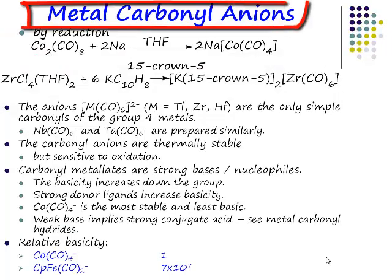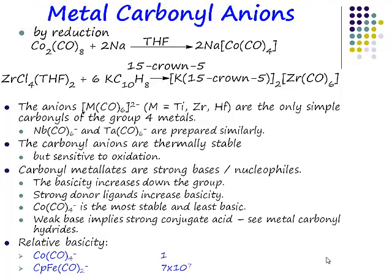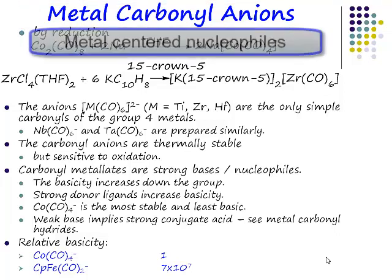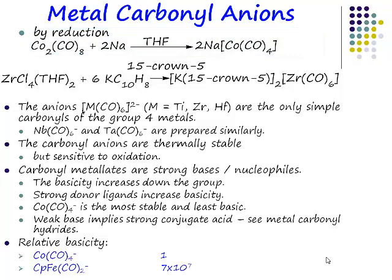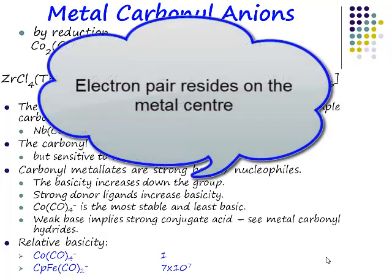These metal carbonyl anions have negative charge centred on the metal. That means that they are metal-centred bases, or metal-centred nucleophiles. You're used to drawing a lone pair of electrons on a heteroatom and having it reacting as a base or as a nucleophile in your reaction mechanisms and pushing the arrows. There's no fundamental difference here — we're talking about a pair of electrons centred on our transition metal.